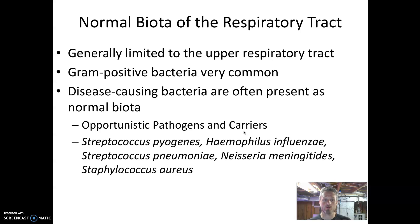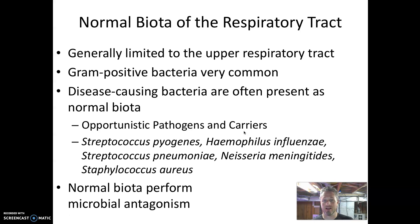Common microbes found in the upper respiratory tract that can cause disease include Streptococcus pyogenes, Haemophilus influenzae, Streptococcus pneumoniae, Neisseria meningitidis, and Staphylococcus aureus. Additionally, the microbes living in our respiratory tract are actually part of our defenses: they take up space that pathogenic microbes find harder to take over, defending their territory and competing with any pathogen that shows up. This is called microbial antagonism, and it's an important component of our defenses against pathogens.